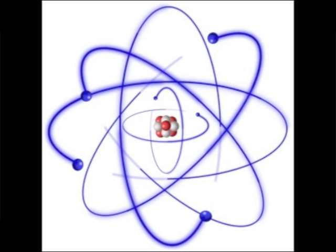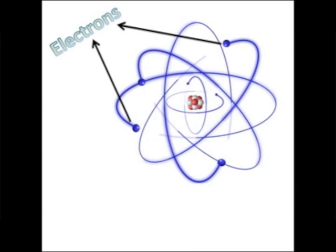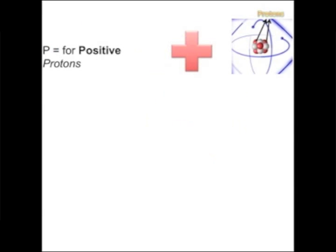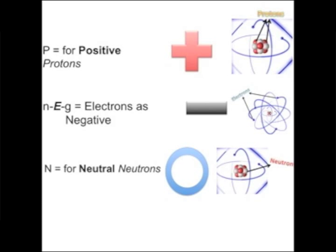Atoms, which are too small to see, make up everything that is around us. They consist of protons, neutrons, and electrons. A proton is a part of an atom with a positive charge. An electron is a part of an atom with a negative charge. A neutron is a part of an atom with no charge at all — a neutral charge.